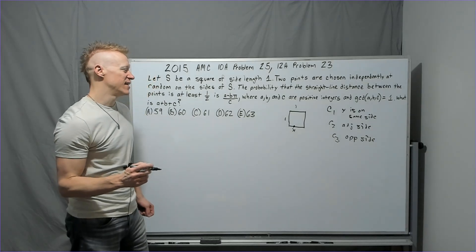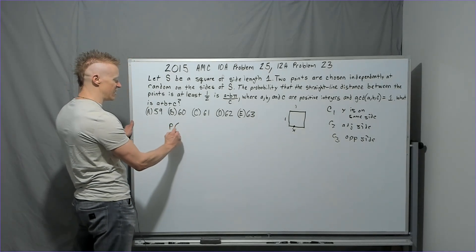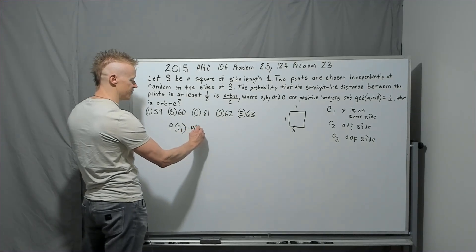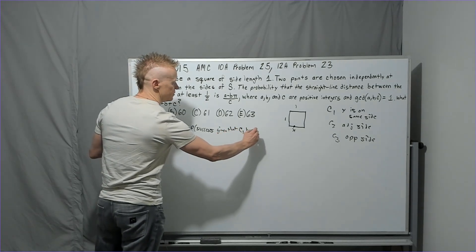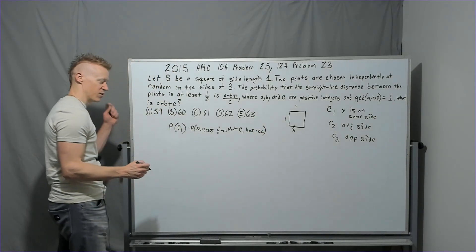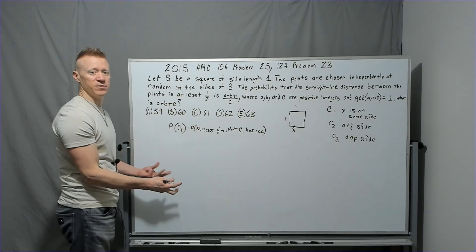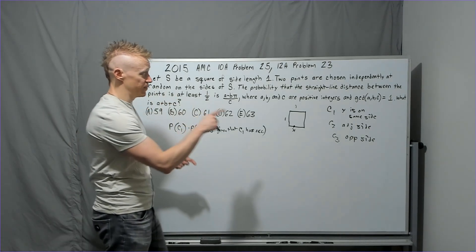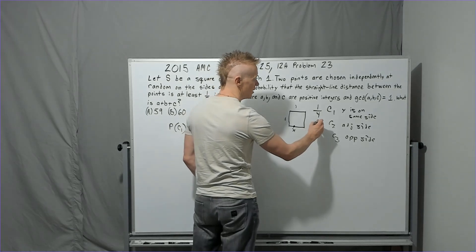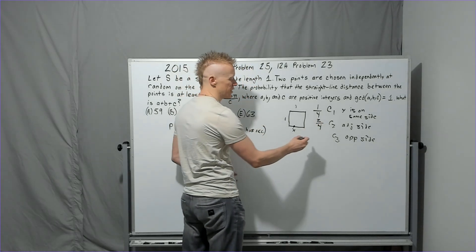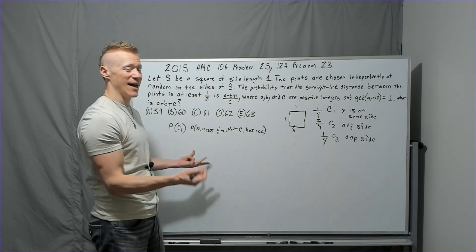Case work should be your default approach for any AMC probability problem. We'll define case one: point Y is on the same side as X. Case two: the adjacent side. Case three: the opposite side. The probability of each case — same side is one in four, adjacent is two out of four, and opposite is one out of four. Check that it adds up to four out of four. Now we'll go through each case.